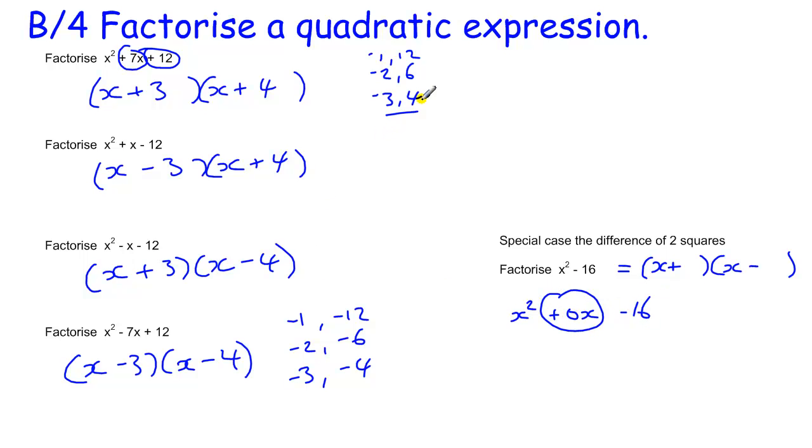So the middle bit is, when we add them together, here we add them together to get 7, here to get 1, and here to get minus 1. Here it gets 0. So they must be the same number.